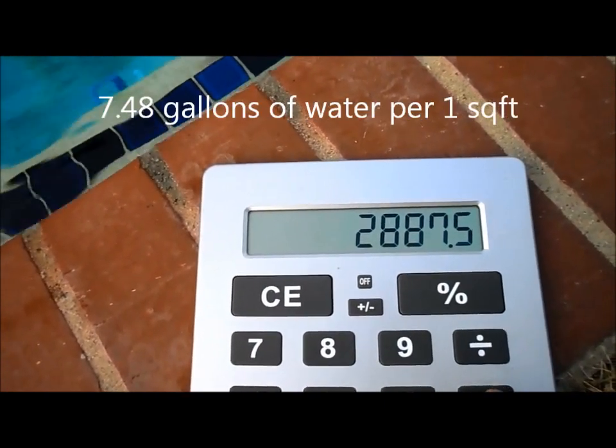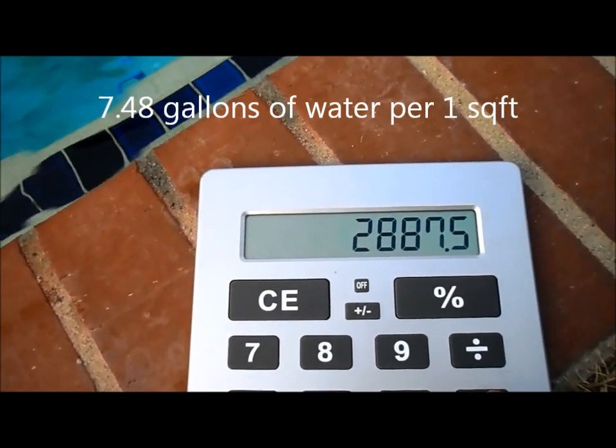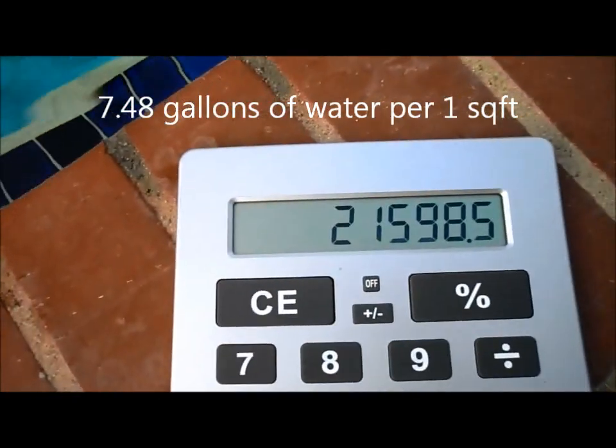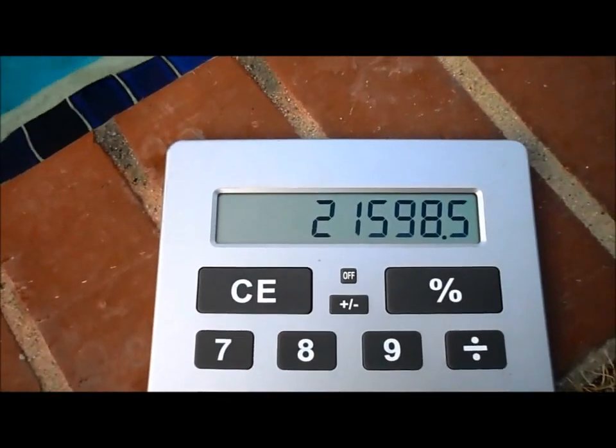So a gallon of water, one square foot of water is 7.48, so times 7.48, and that gives us 21,598 gallons in this pool.